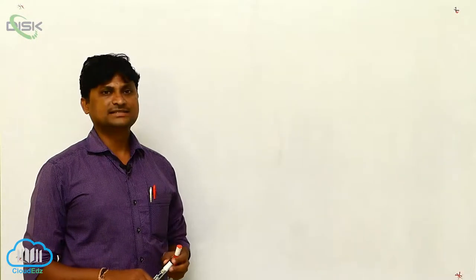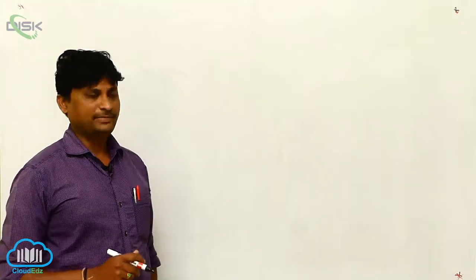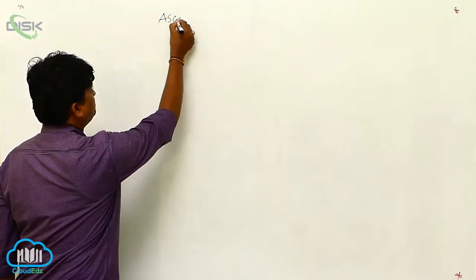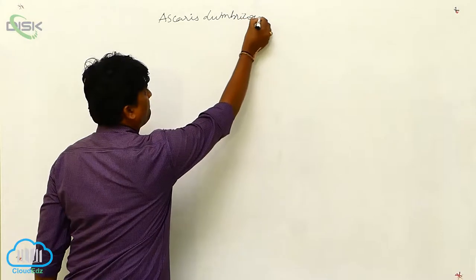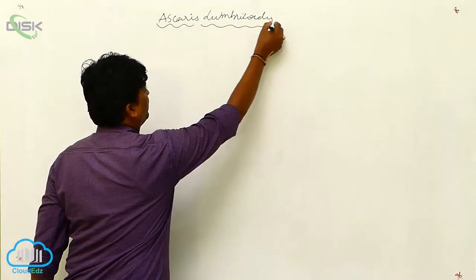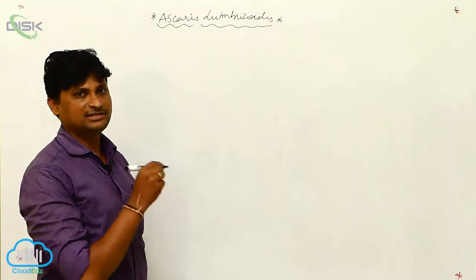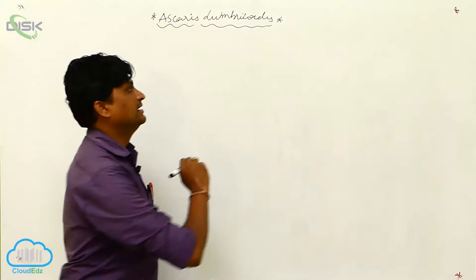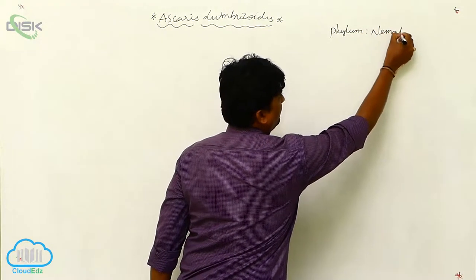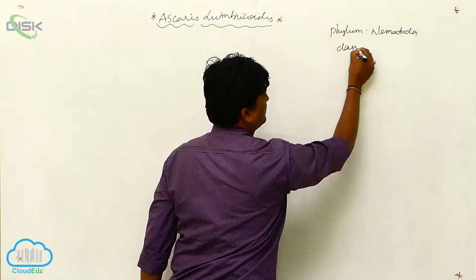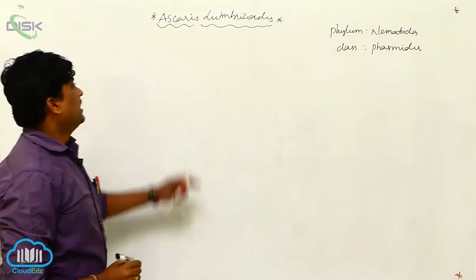In this 60-unit first-year zoology lesson on biology and human welfare, we are going to discuss Ascaris lumbricoides, a parasite. The name 'lumbricoides' refers to resemblance to lumbricus organisms. Its classification: Phylum Nematoda, Class Phasmaria.